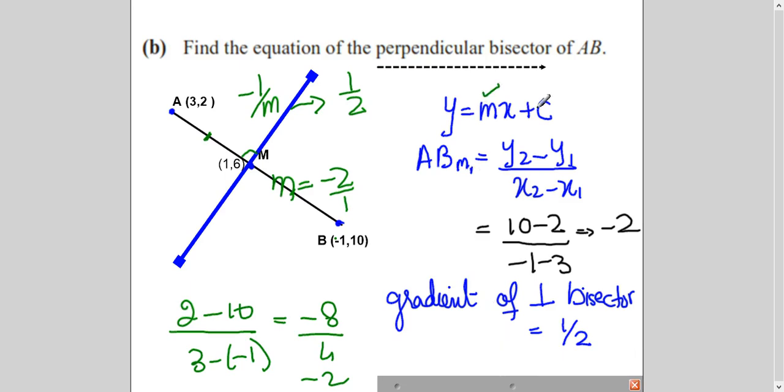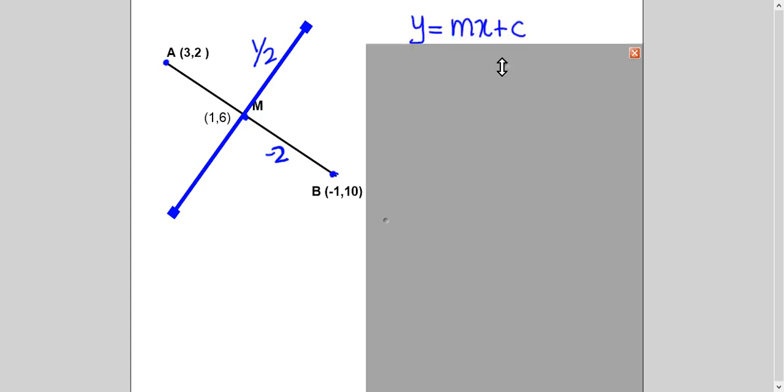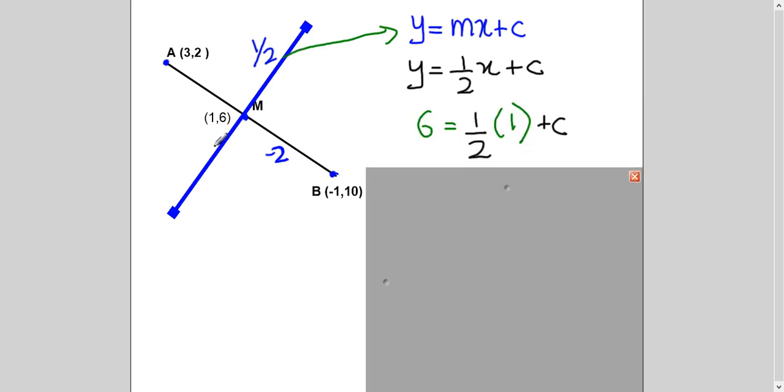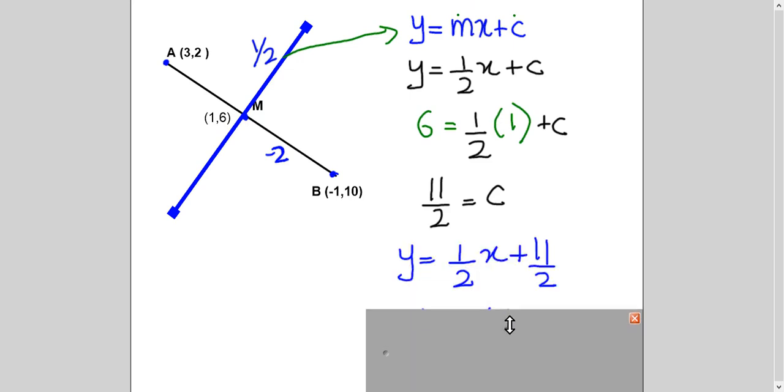So now I know M. How will I find out C? We have found gradient, which is this. To find out C, this point should be on this line. So what point do you know on this line? Only one point, which is the midpoint (1,6). So you will substitute Y or replace Y by 6 and X by 1 to get your C. And then you simplify it. You got C, 11 over 2. So now I have M, I have C. I will just plug in the values here. And I will rearrange it. So this is my equation of the perpendicular bisector.